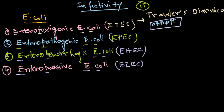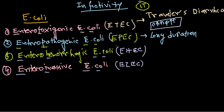The second type is EPEC — enteropathogenic E. coli. This also causes watery diarrhea, but for a long duration. This type of disease is mostly caused in newborns and infants, because the infection can be spread from the mother to the newborn. Both ETEC and EPEC cause this kind of colitis or diarrhea-type symptoms.